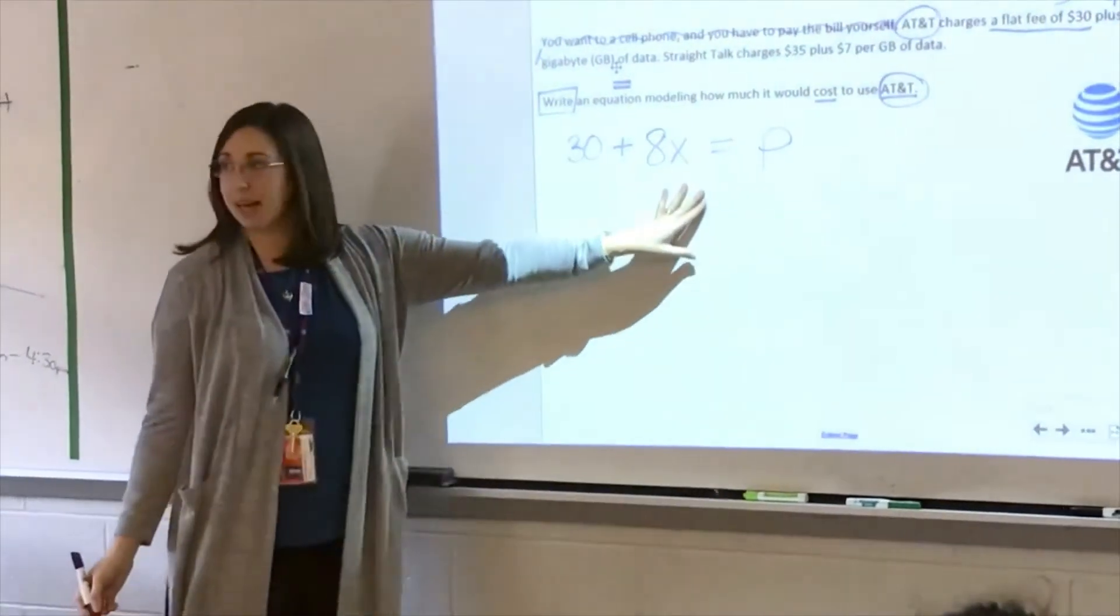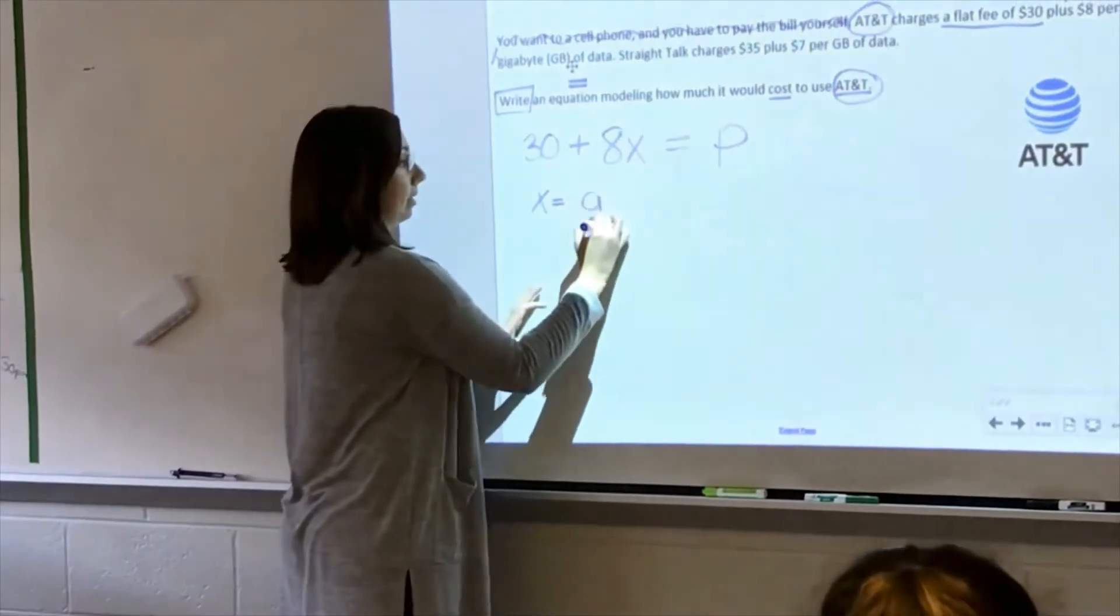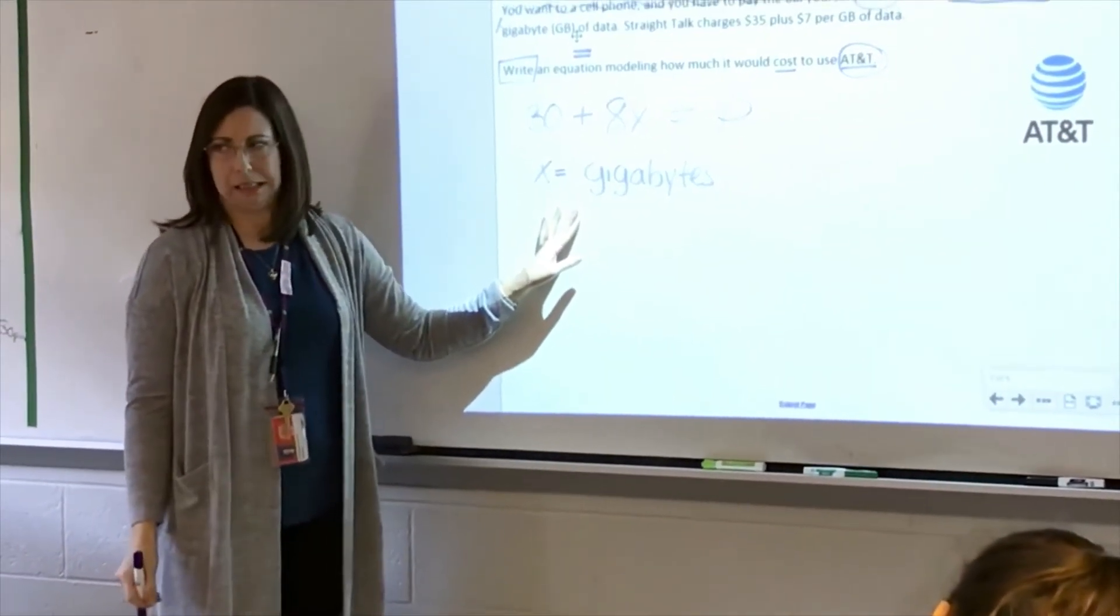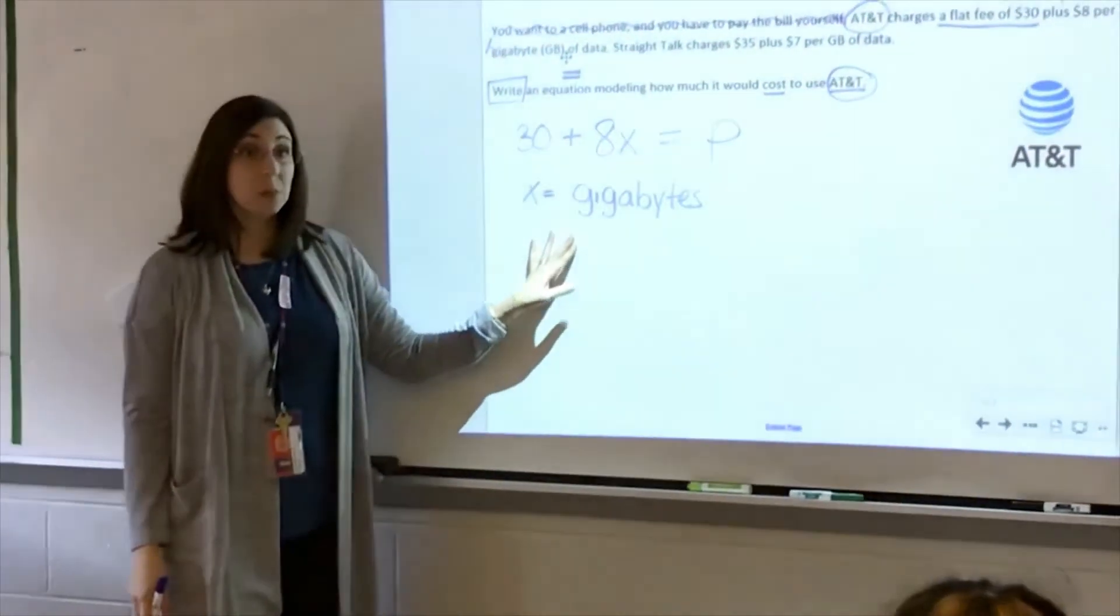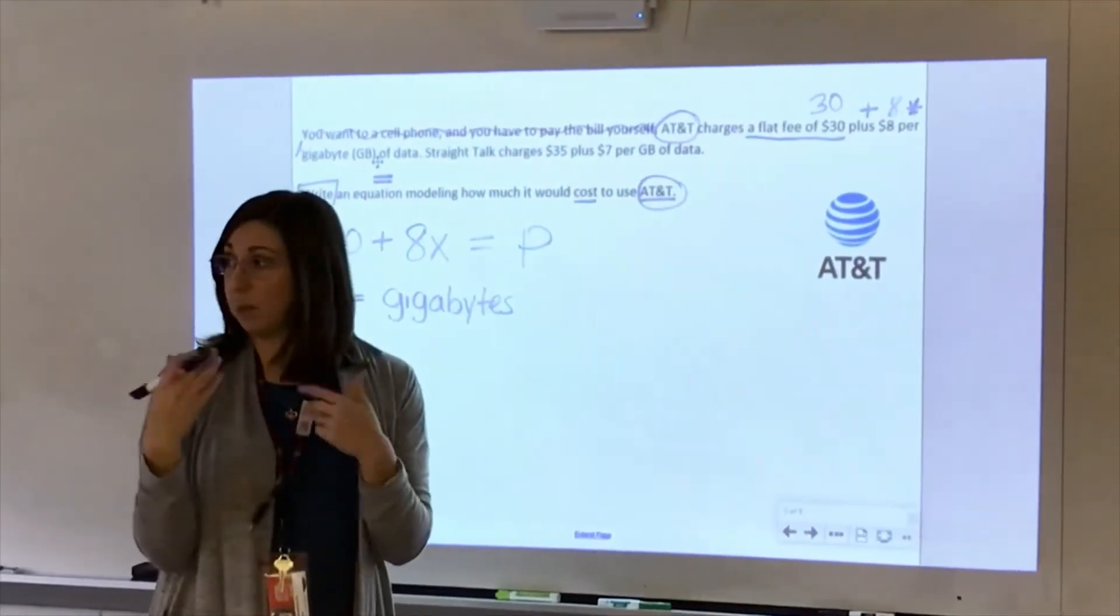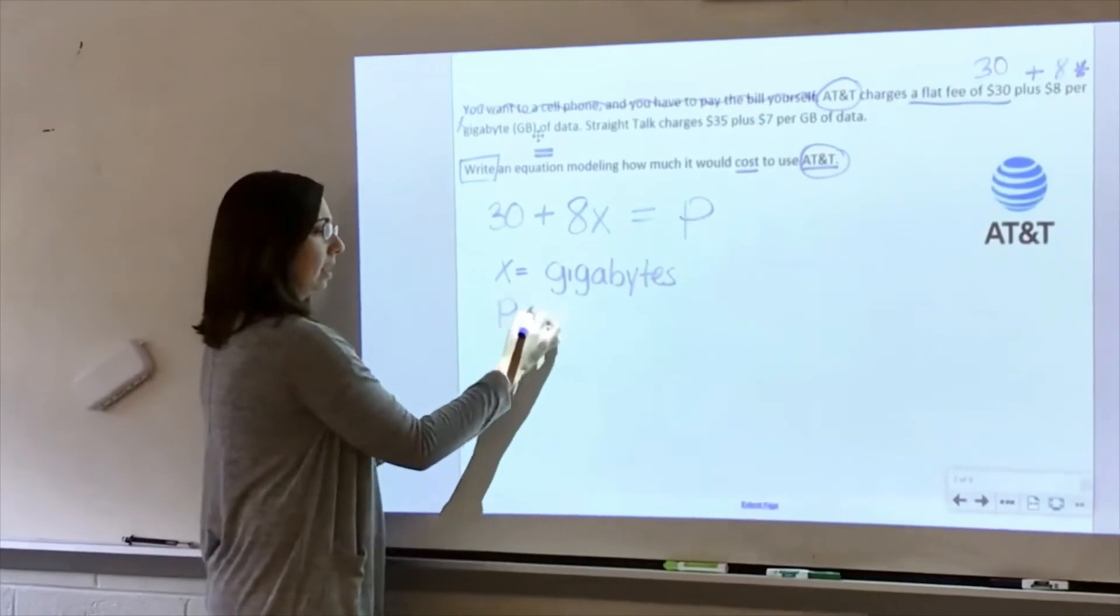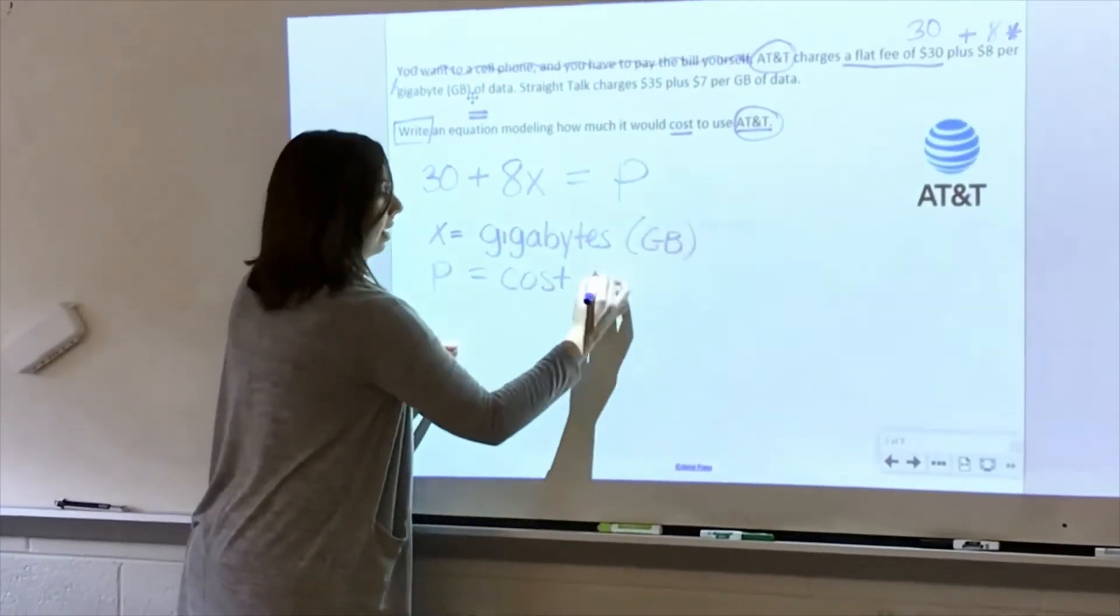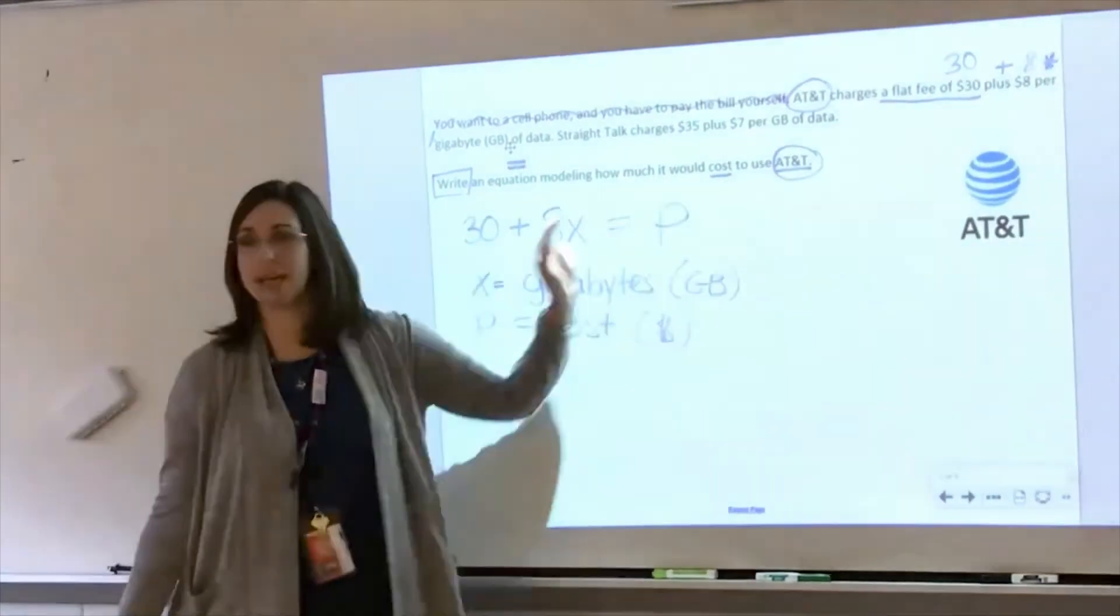I use B. Now remember I said if we're using variables I need to define them. So what does X mean in this problem? What does this stand for? It means the gigabytes. Is that a word that I know? Did I get stuck on that word when I was reading? What are we talking about when we think gigabytes? Measurement of data, okay. And then what are we saying for P? The cost, the total, the cost of the bill. So we're using gigabytes, we're using dollars for the cost. So now have I written an equation modeling how much it would cost to use AT&T? Yes.